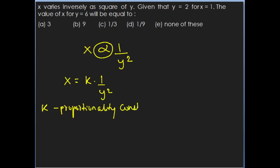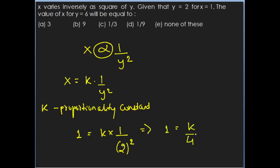K is the proportionality constant, and this value is constant for all values of X and Y. When X equals 1 and Y equals 2, substitute directly: 1 equals k into 1 upon 2 squared, so 1 equals k upon 4. This implies the value of k is 4. So the proportionality constant k equals 4.